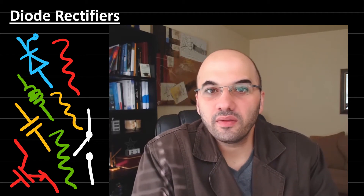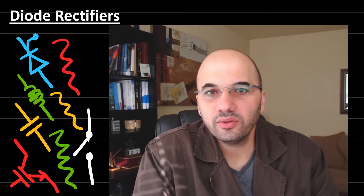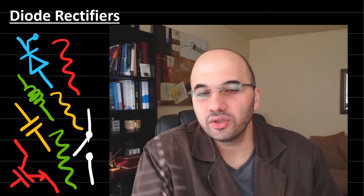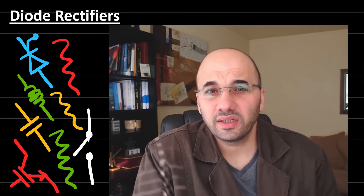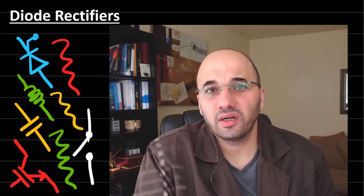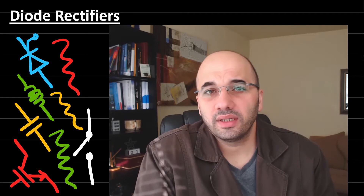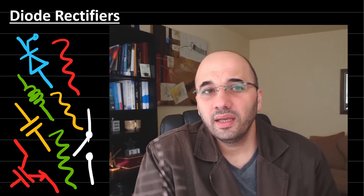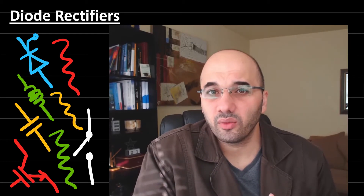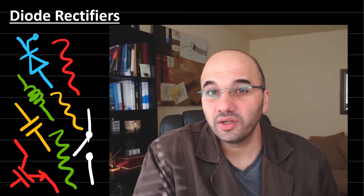Hi and welcome back to Power Electronics Lectures. In today's lecture we will talk about the diode rectifiers, the uncontrolled rectifiers. We will talk about an introduction to these rectifiers, how these rectifiers are operating, and we will also take some examples. We will compare between two types of rectifiers: the center tap rectifiers and the bridge rectifier.